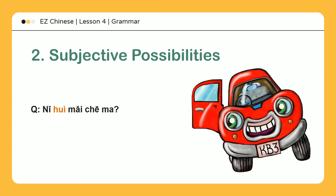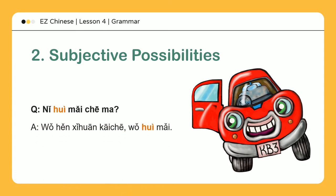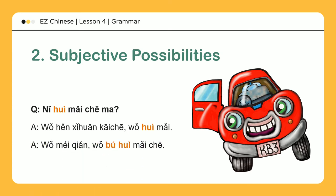开车: 我很喜欢开车，我会买 — I enjoy driving very much, so I will buy one. 没钱: 我没钱，我不会买车 — I don't have any money, so I won't buy one.